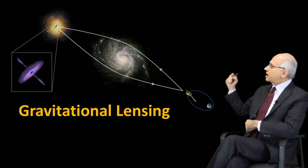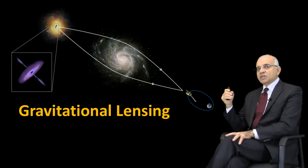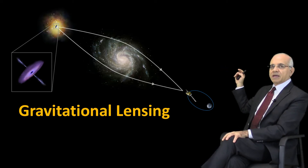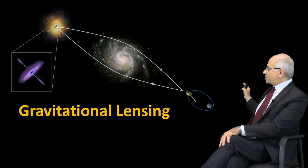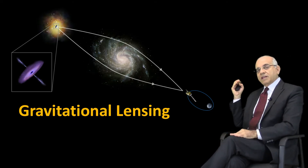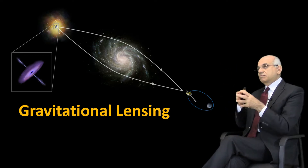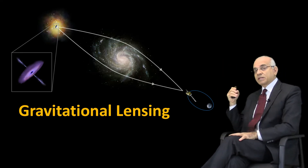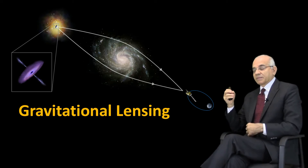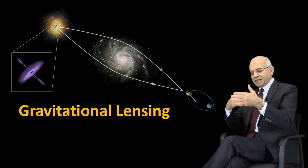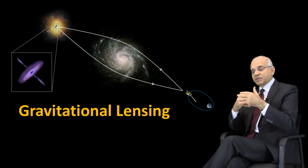If you look here at this illustration, you'll see that if there's a galaxy, and we are observers on Earth, as you can see here at the lower right, and if there's a star with tremendous brilliance behind this galaxy, we'll not be able to see it because our galaxy is in the way between the star and our line of vision.